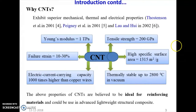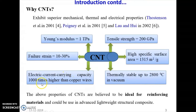Other properties include higher specific surface area of carbon nanotube. Electric current carrying capacity is 1000 times higher than copper wire, and thermally stable up to 2800 degrees centigrade in vacuum. So these properties of CNT are believed to be ideal for reinforcing material, and in future it could be used as a lightweight structural composite.